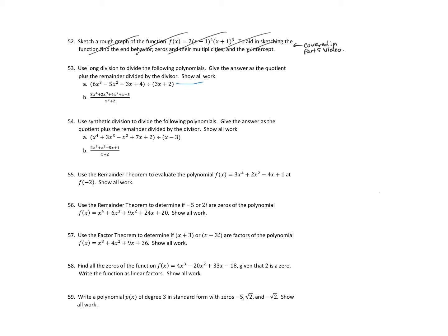Alright, so for this one we'll set this up as 3x plus 2 dividing into 6x cubed minus 5x squared minus 3x plus 4.